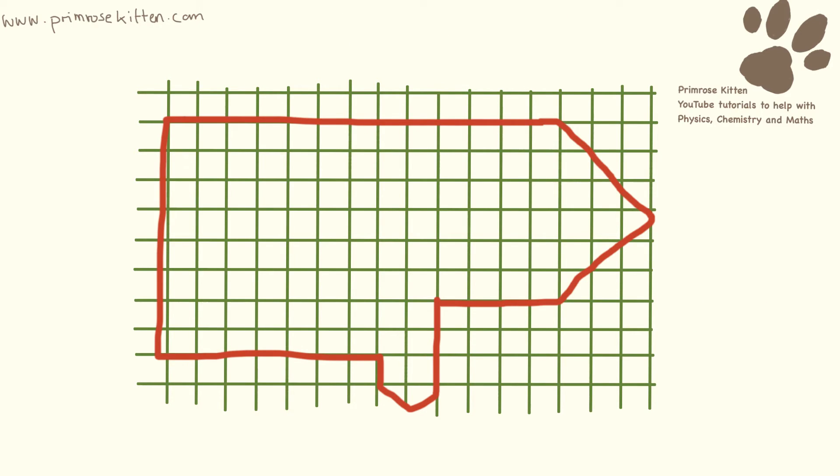Here we have another example for you. Counting the energy in: 1, 2, 3, 4, 5, 6, 7, 8. And again, it doesn't really matter about the units here. And useful energy out: 1, 2, 3, 4, 5, 6.